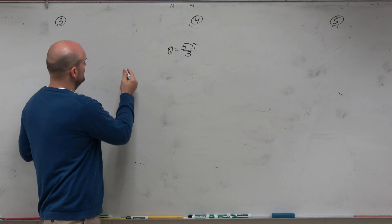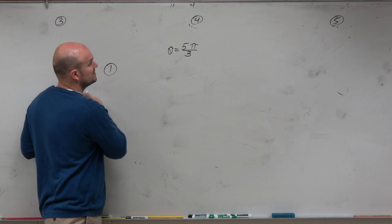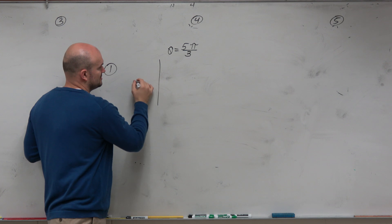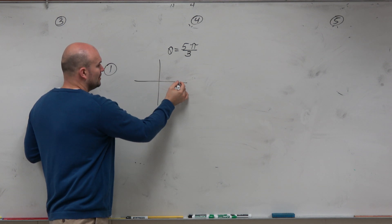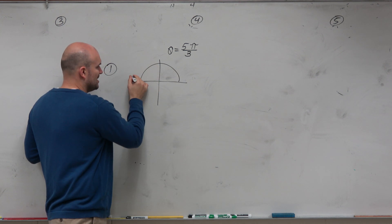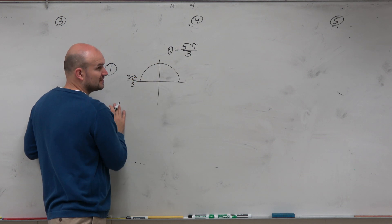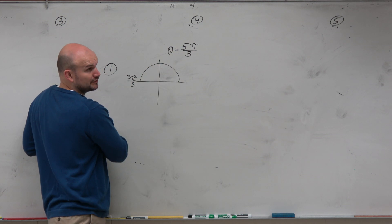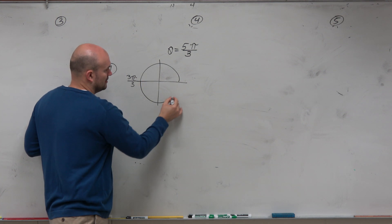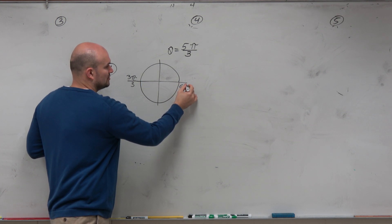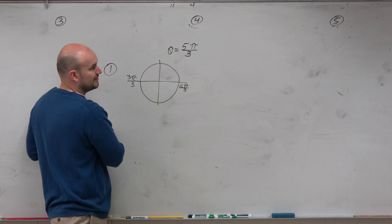My step-by-step is going to be, first, just sketch the angle. And so by sketching the angle, we understand that half of the circle is π. In terms of our denominator, that's 3π over 3. Well, this angle is bigger than 3π over 3. So I need to look all the way around the circle, which would be 2π, which is the same thing as 6π over 3.